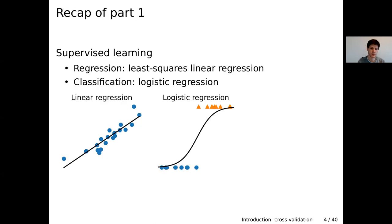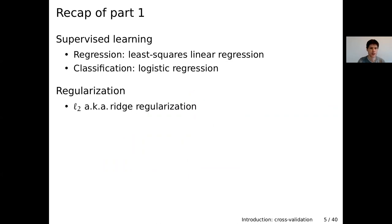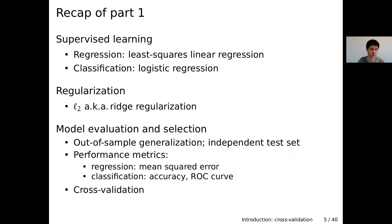I'll start with a brief recap of the first part. In the first lecture you heard about supervised learning and the two types: regression, where we predict a continuous target, and classification, where we predict a categorical variable. We also covered regularization to stabilize model parameters, for example by adding an L2 penalty on the model coefficients, known as ridge regularization.